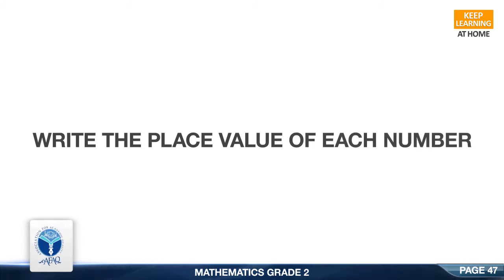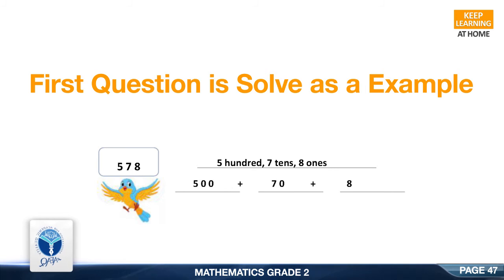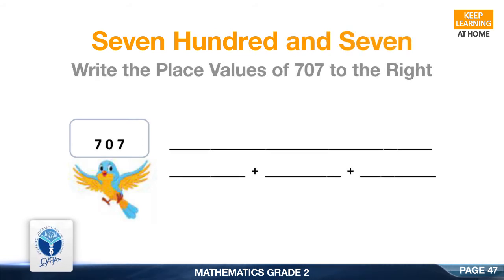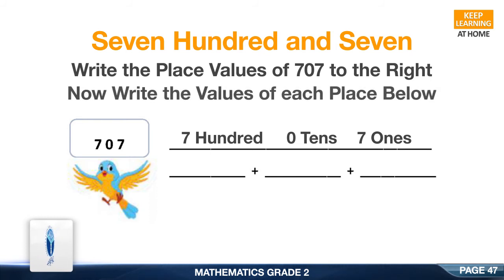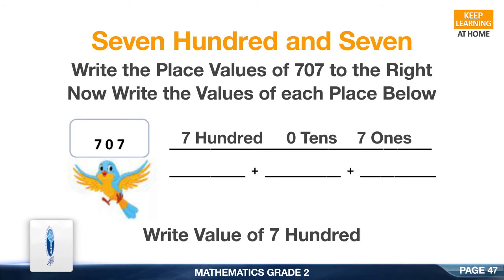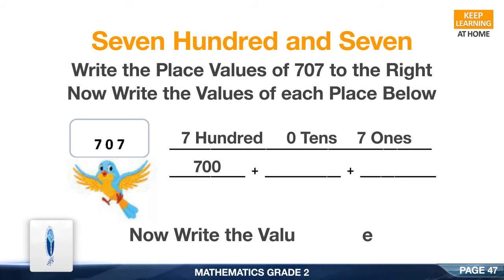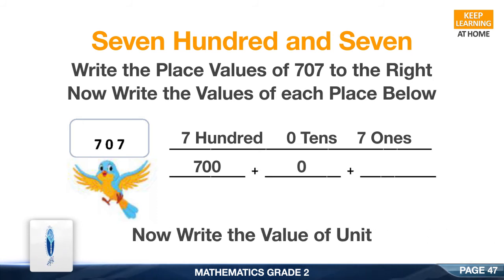Now we move on to the next resource pack concept: Write the place value of each number. The first question is solved as an example. Now move to the next question: 707. Write the place values of 707 to the right. Good, it is 700 and 0 tens. Now write the values of each place below. Write value of hundreds: Good, it is 7.